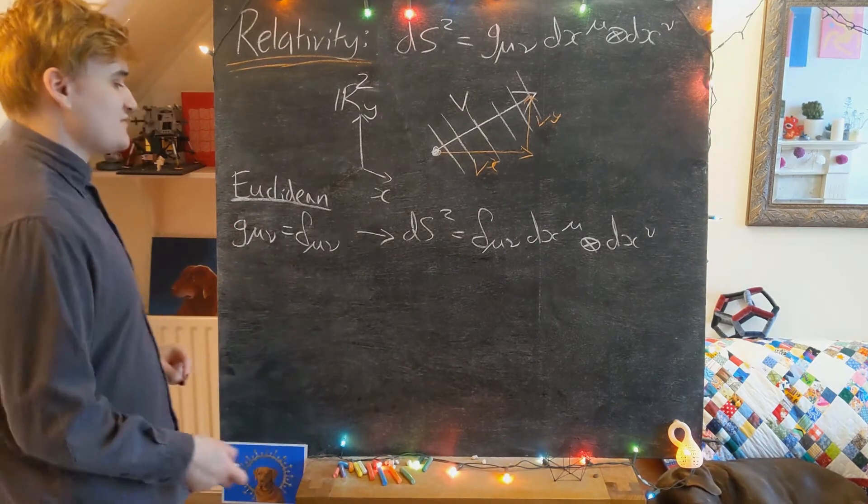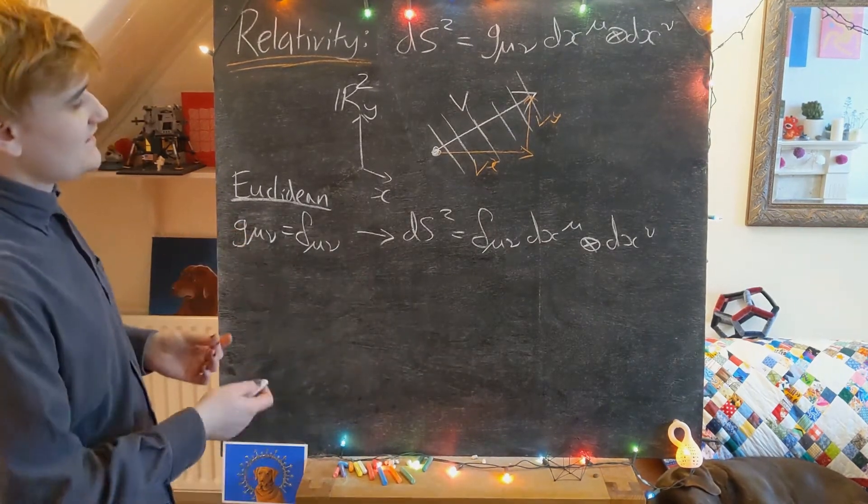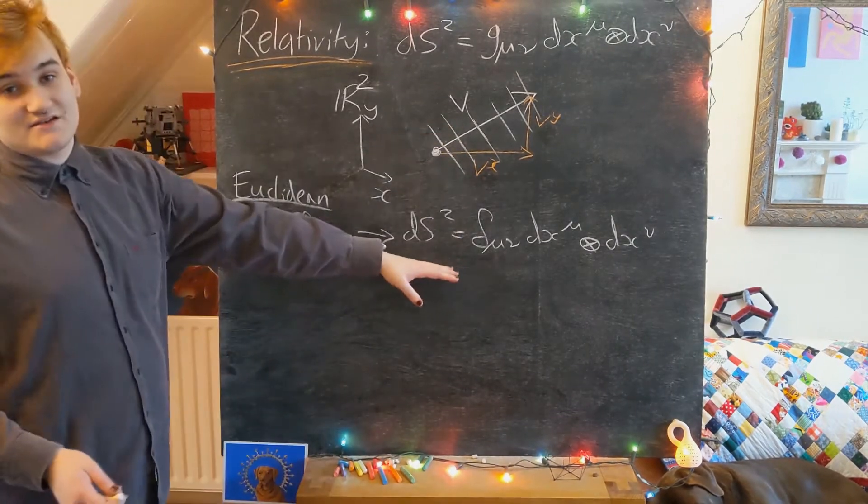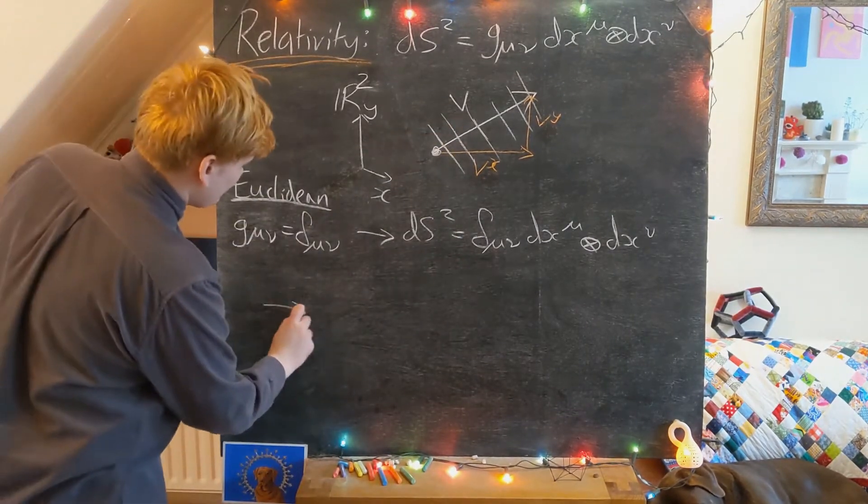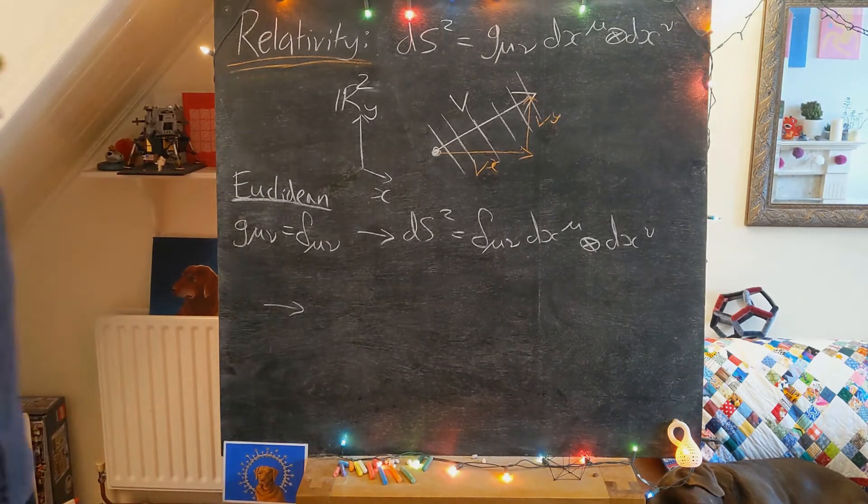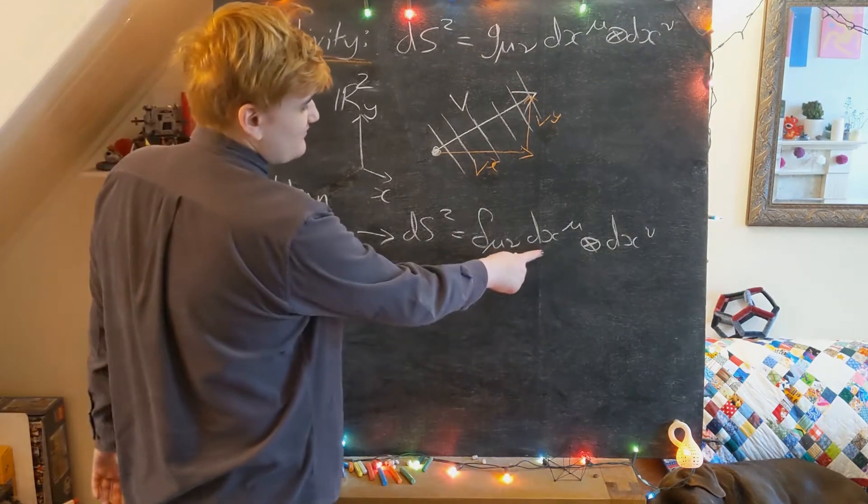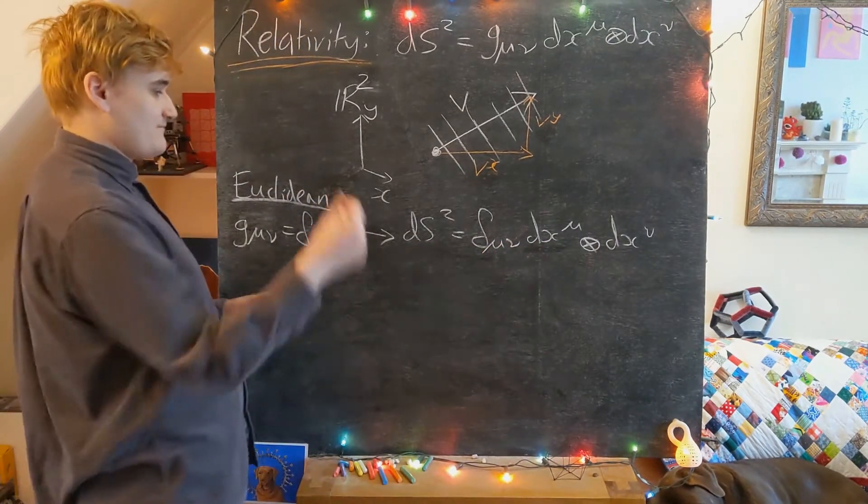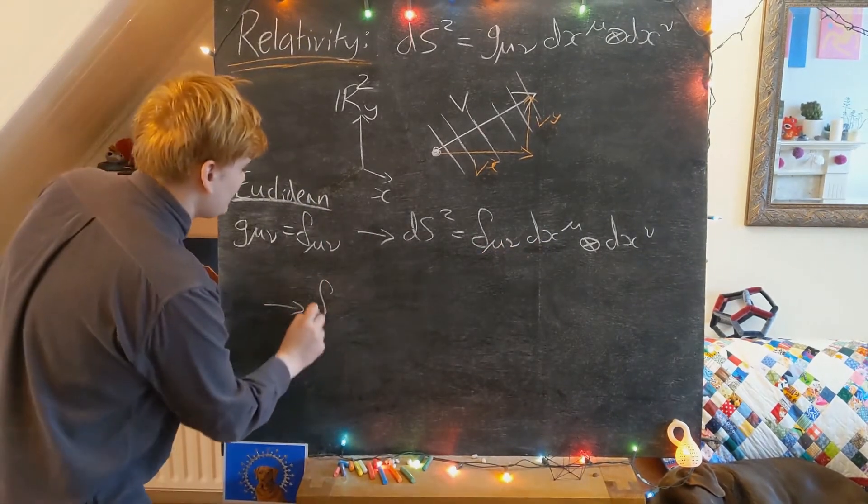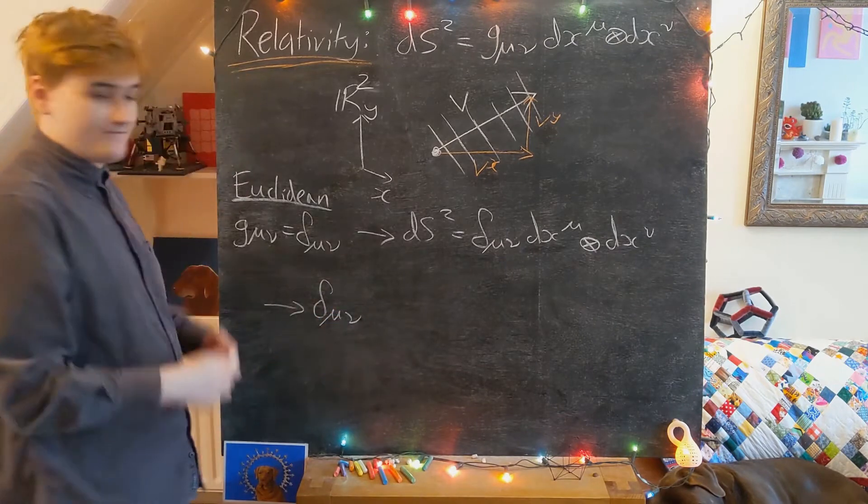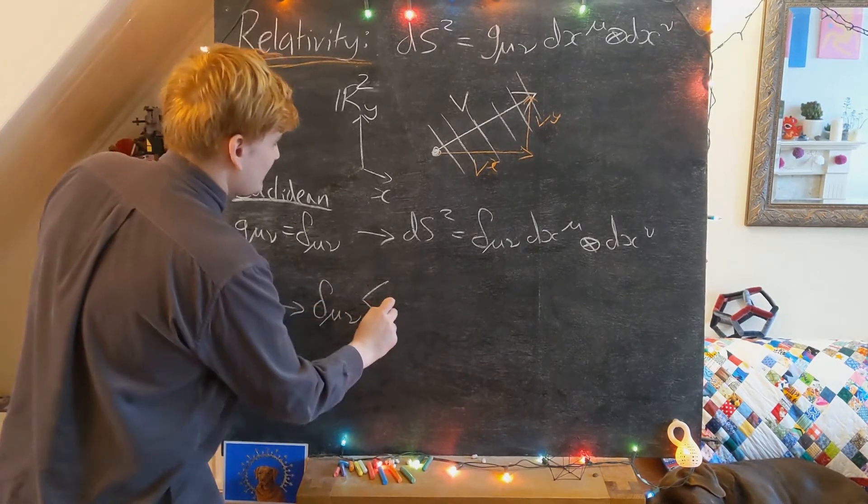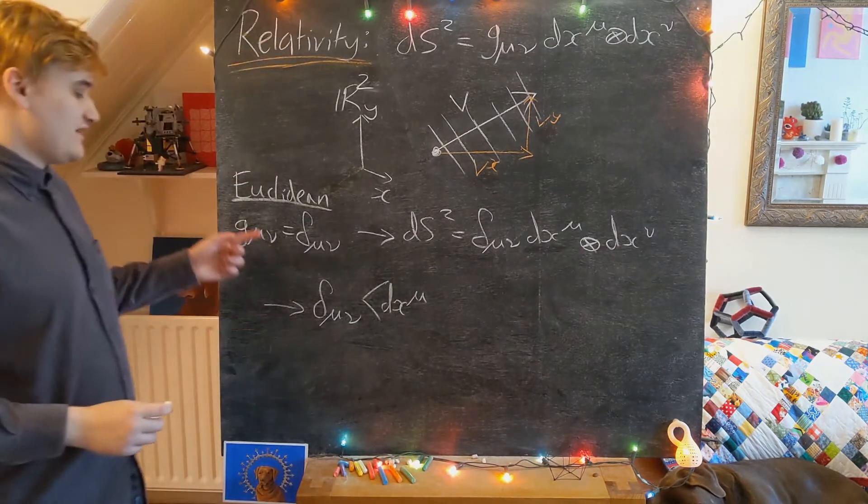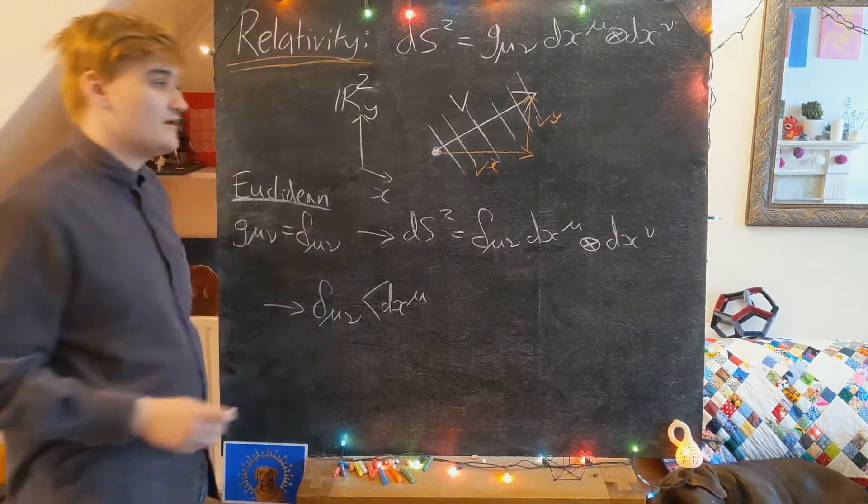But now let's see what happens when we feed in a vector into this Euclidean metric. Well, it's going to be very simple. Let's just remember we need to realize we're using these dx's - they're maps, they need to receive an input. So I'll just rewrite it using the angled brackets to make it explicit.